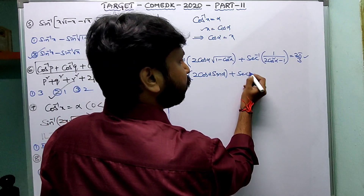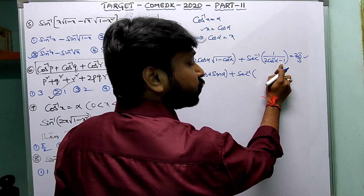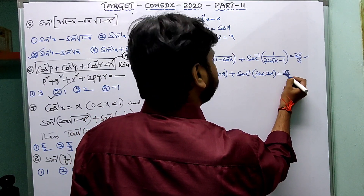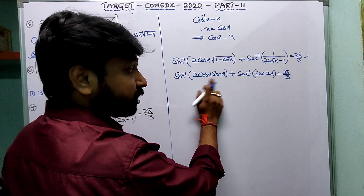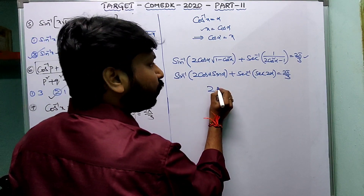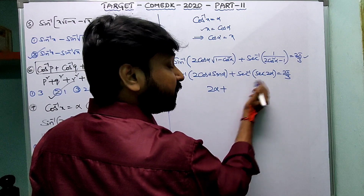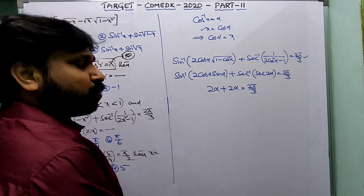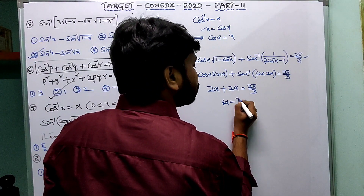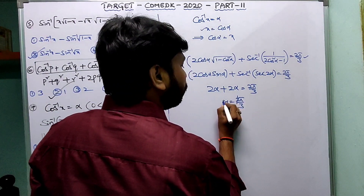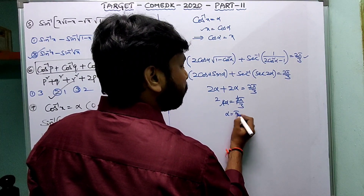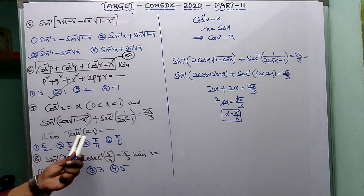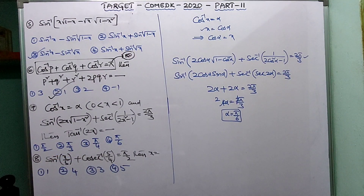Since 2cos²α - 1 = cos(2α), its reciprocal is sec(2α). So the expression is sin⁻¹(sin2α) + sec⁻¹(sec2α) = 2α + 2α = 4α = 2π/3. Therefore α = π/6.